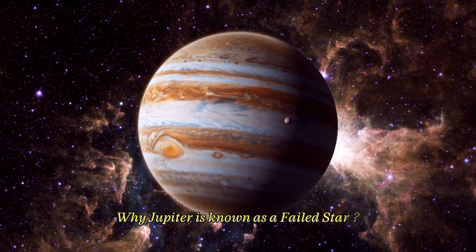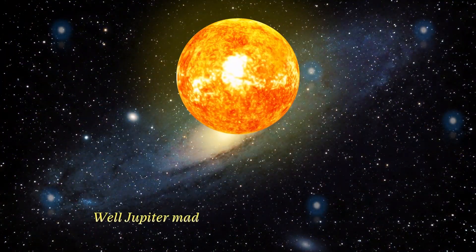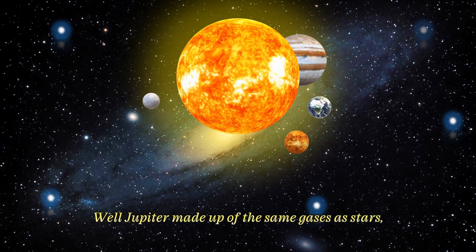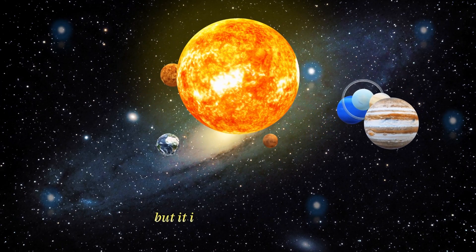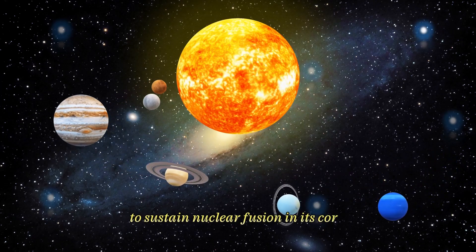Why is Jupiter known as a failed star? Well, Jupiter is made up of the same gases as stars, hydrogen and helium, but it is not massive enough to sustain nuclear fusion in its core.